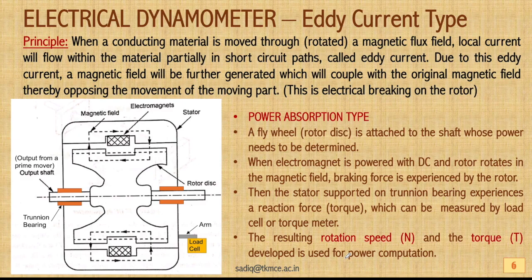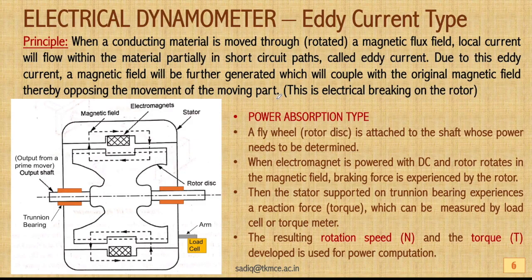The electrical dynamometer discussed here is the eddy current type, again a power absorption type. The principle is: when a conducting material is rotated in a magnetic flux field, local currents — called eddy currents — flow within the material in short circuit paths. This eddy current generates a magnetic field that couples with the original magnetic field, thereby opposing the movement of the rotor. This is called electrical braking on a rotor.